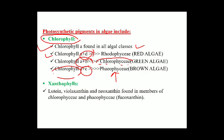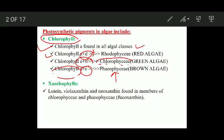Now the xanthophylls. There are some important xanthophylls like lutein, violaxanthin, and neoxanthin, and these are found in members of both Chlorophyceae and Phaeophyceae. Phaeophyceae, in addition to containing all three of those xanthophylls, also contains fucoxanthin, which is its characteristic xanthophyll.